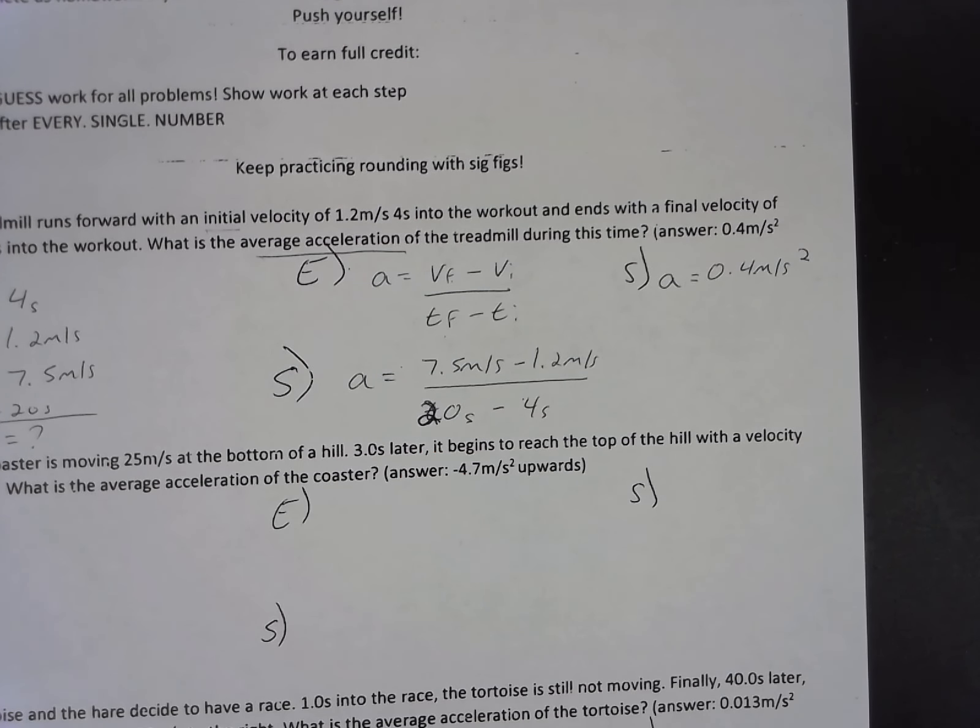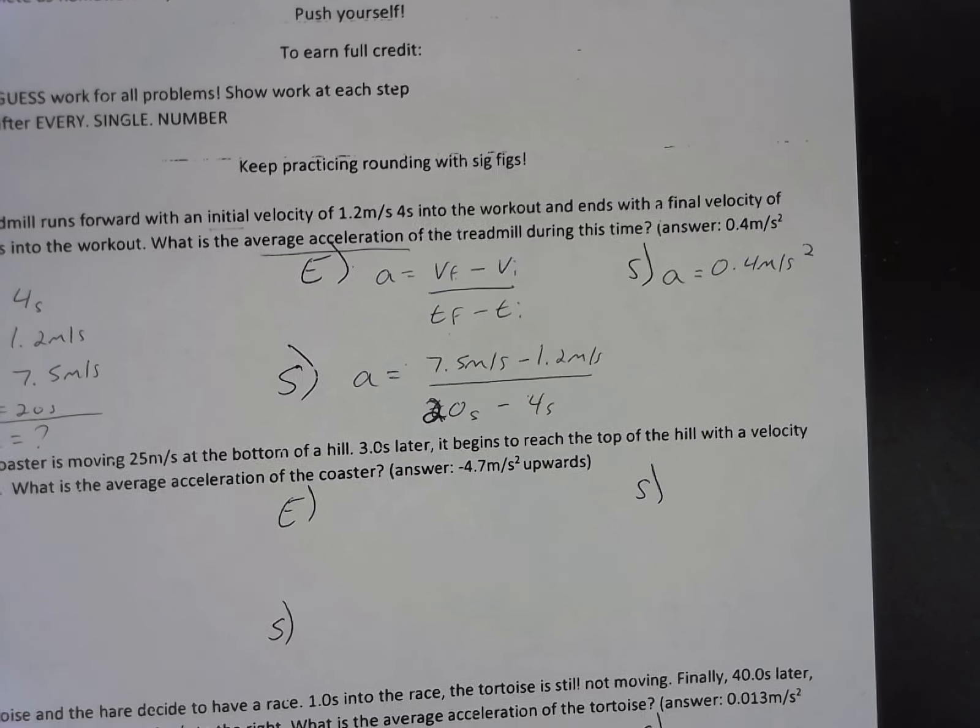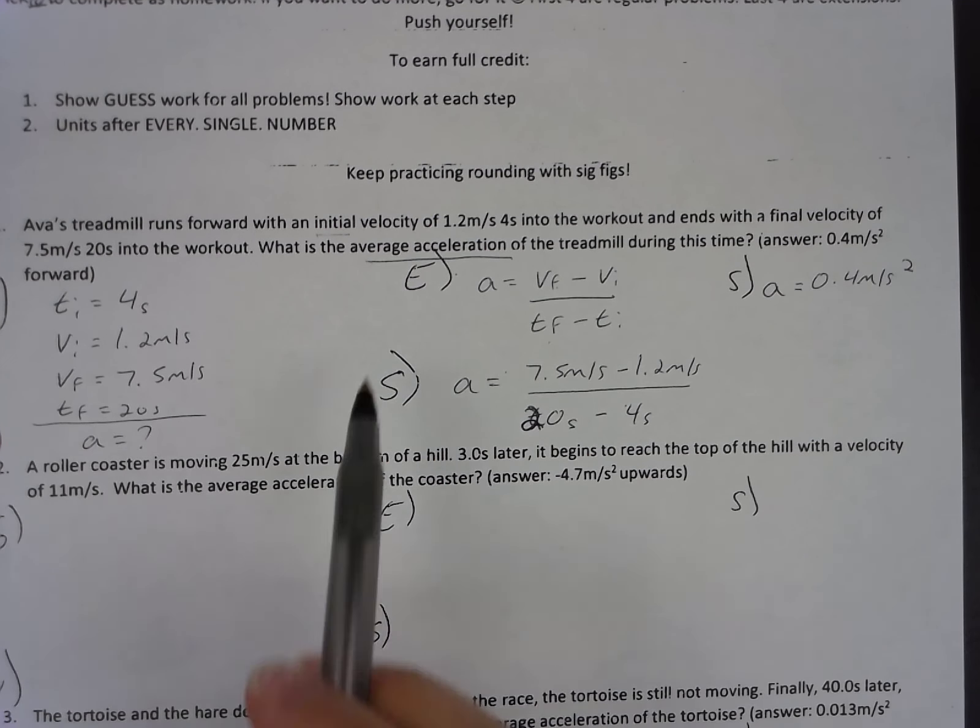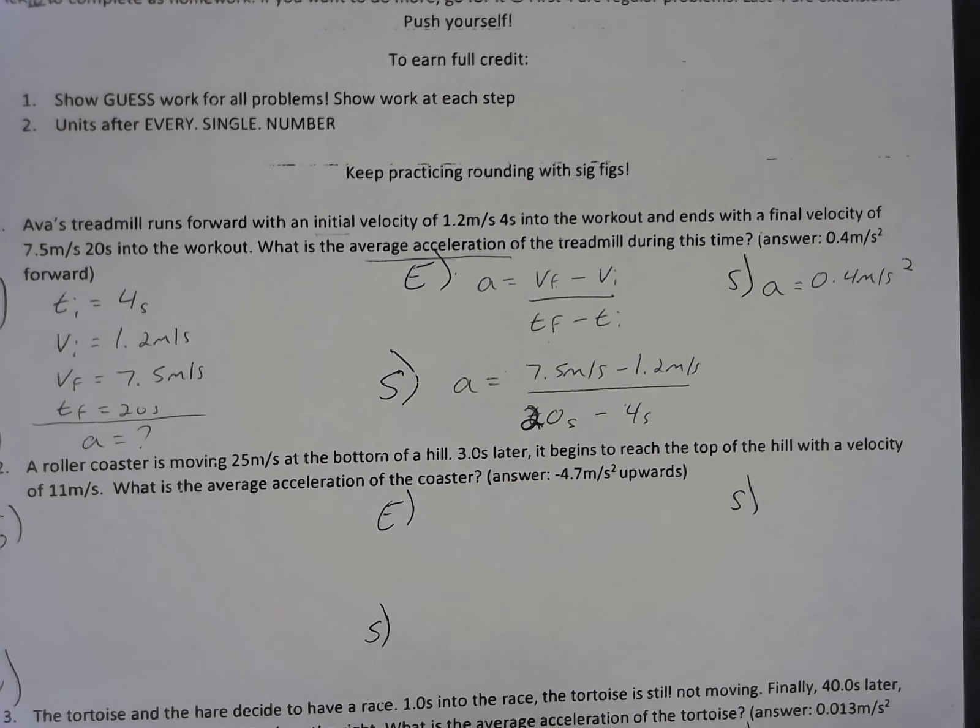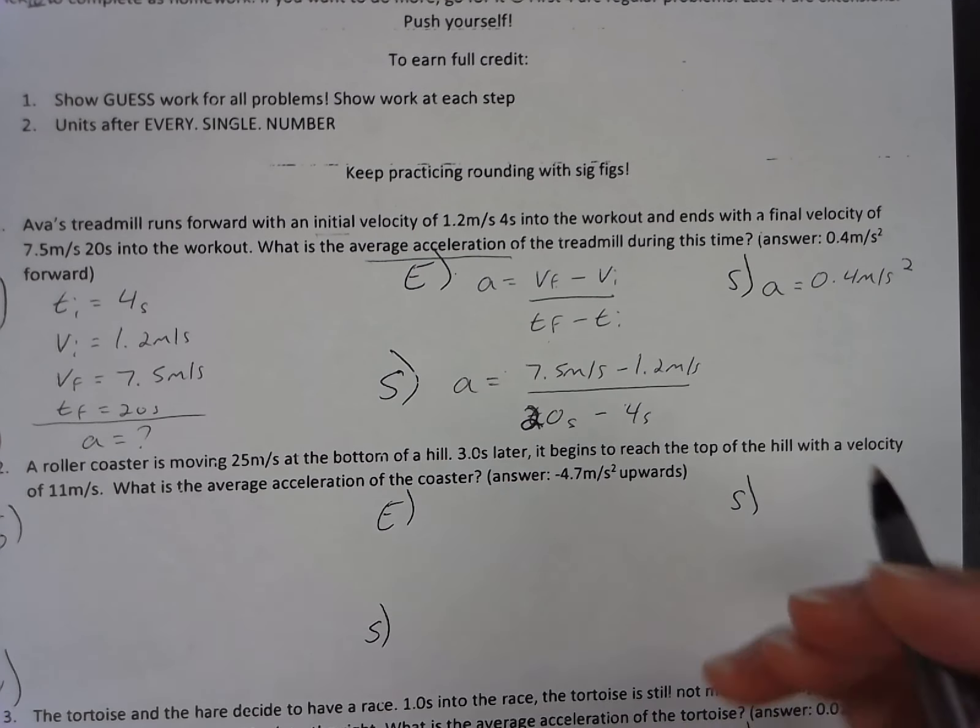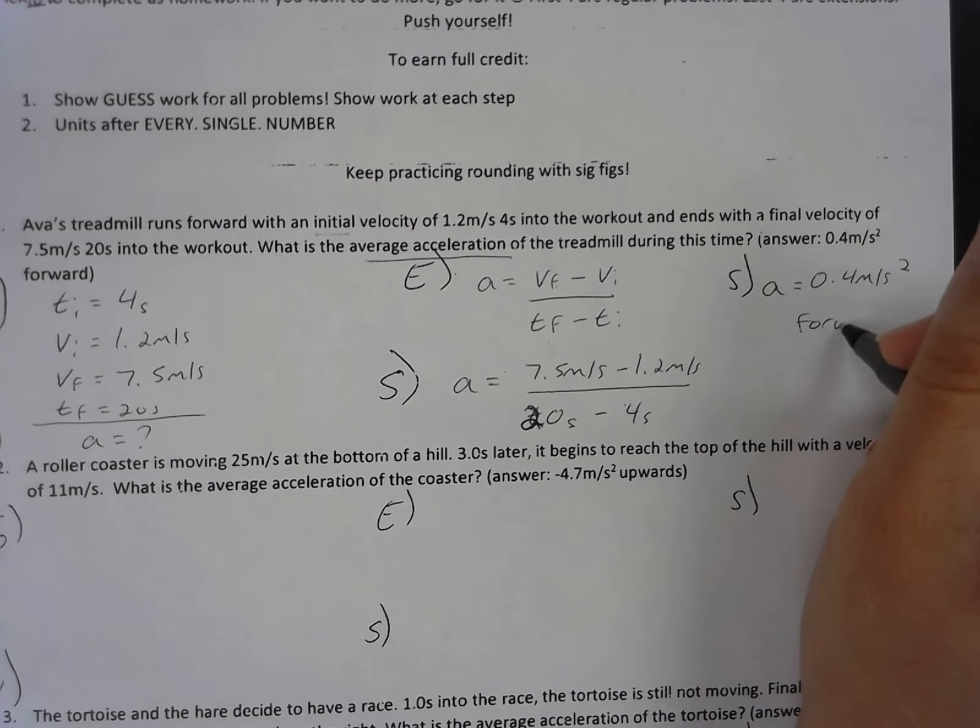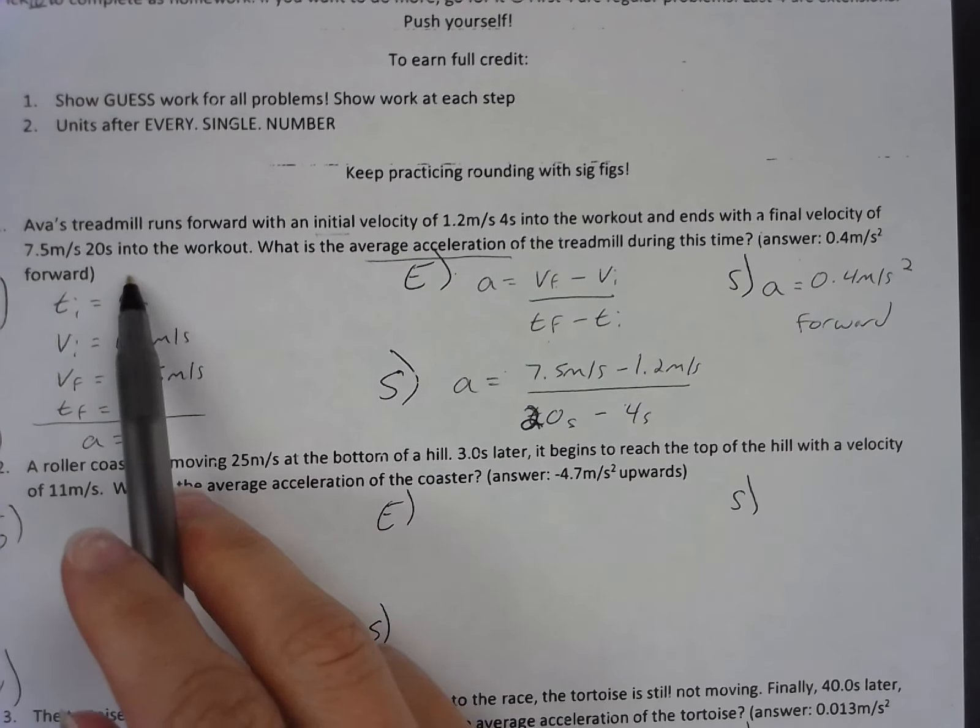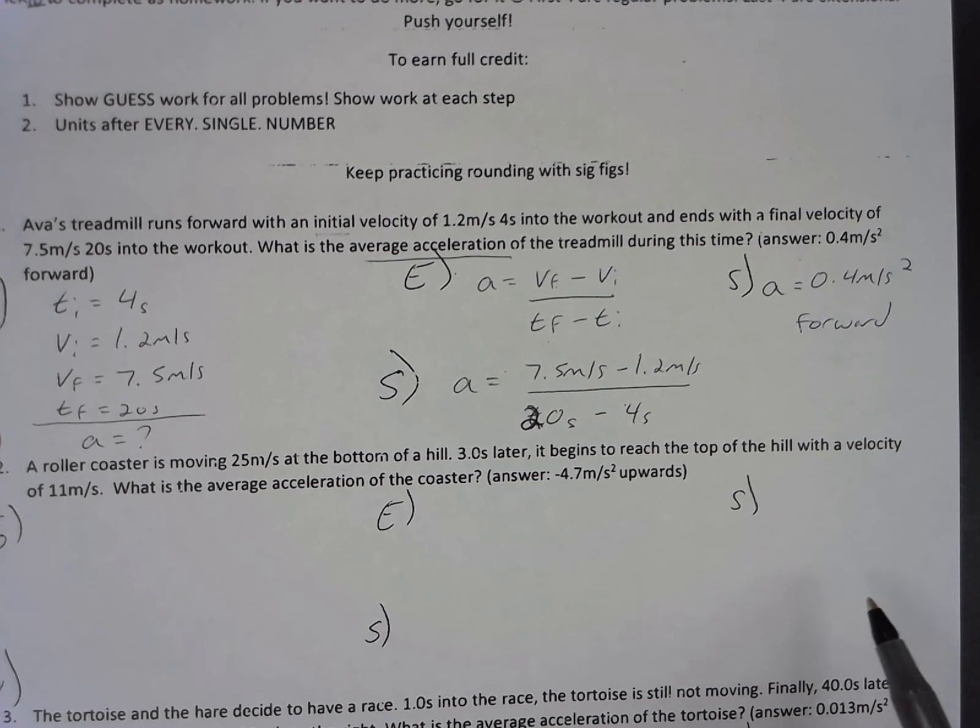Now, acceleration is a vector quantity. So if a direction is given, I should include that. So here, the treadmill is running forward. So I can include that forward in my answer. Now, if you notice with these problems, you do have the answer provided right next to it. So you can check your work as you go. So do please use that just to check your understanding.